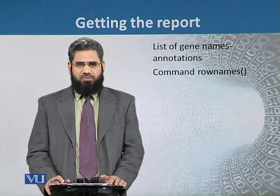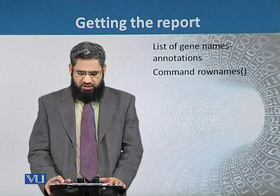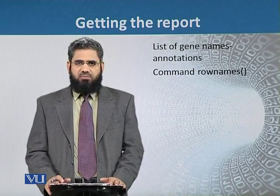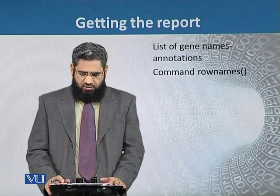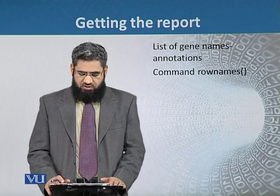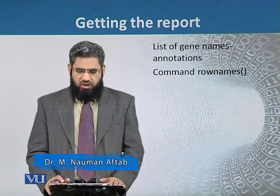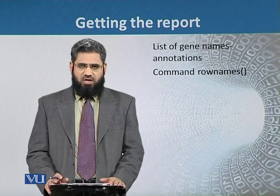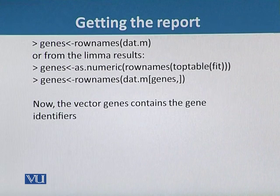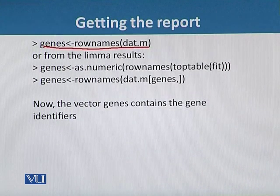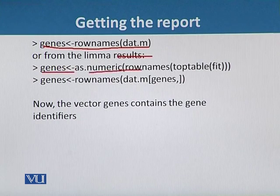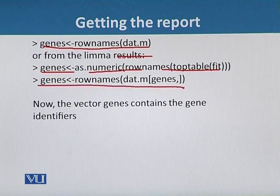To get the report, we first need the list of genes, which can be combined with annotation information. To get the list of genes as row names, we use the command rownames() on the normalized data. We write: genes <- rownames(normalized_data). From the limma results, we can also get genes as numeric row names from top tables. The vector 'genes' will then contain the gene identifiers.